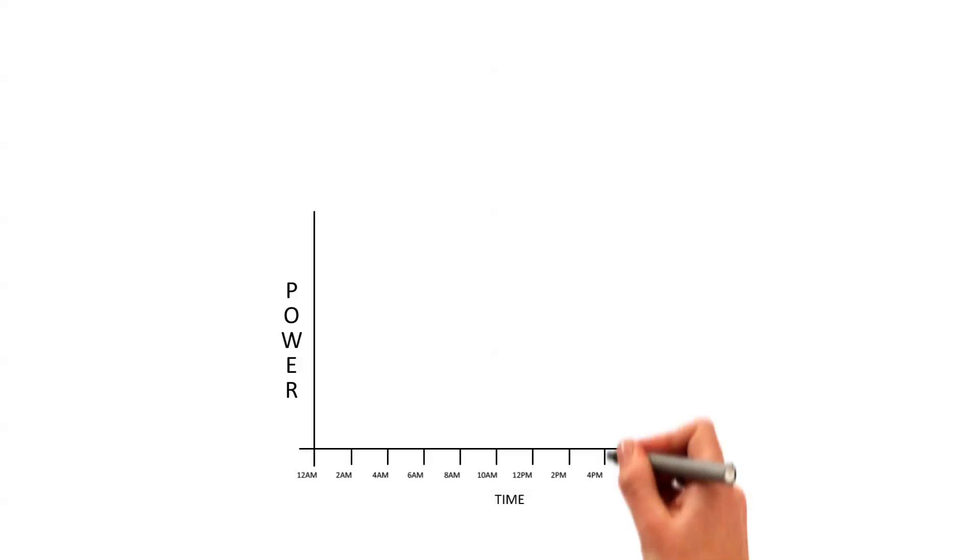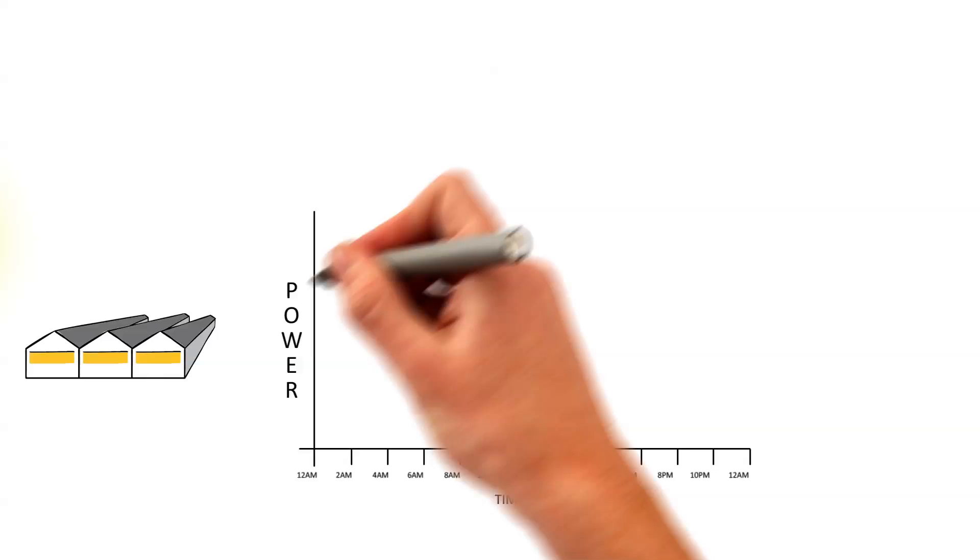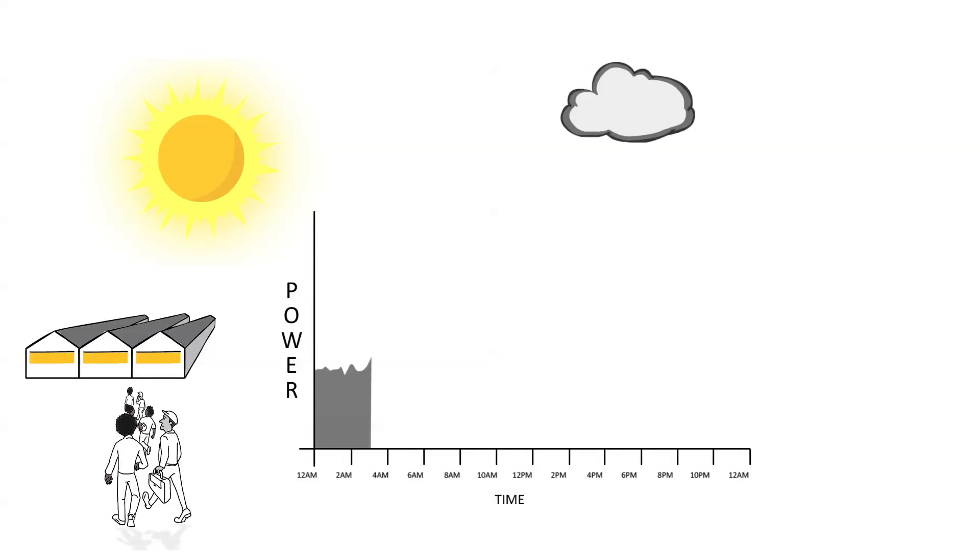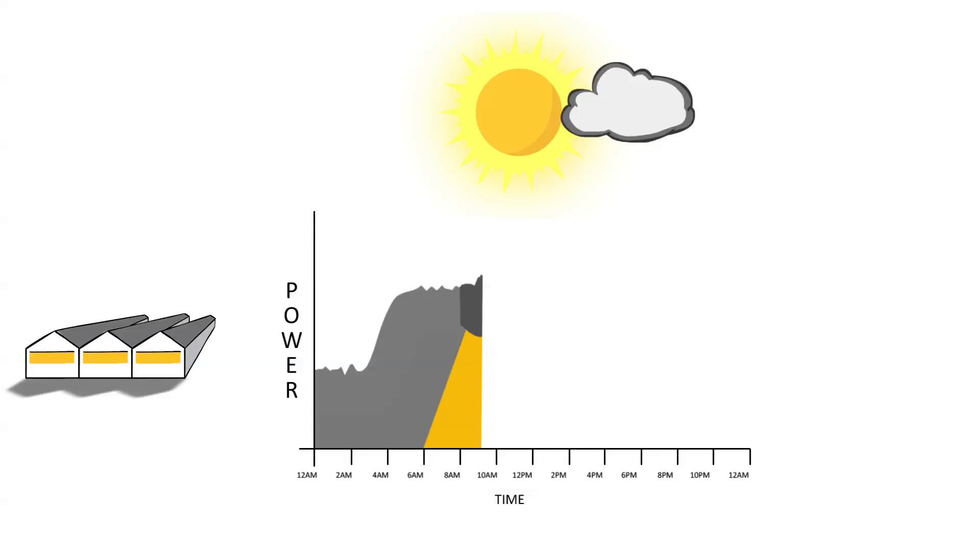To protect the generator, these solar controls constantly regulate the overall output produced from all power sources, ensuring the generator will always run above its minimum threshold.